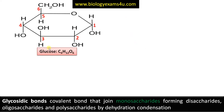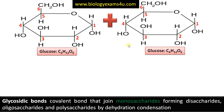Let's take an example. This is glucose in ring form, C6H12O6, a monosaccharide — the most common monosaccharide. This is also glucose. Now we have two glucose molecules, two monosaccharides. A bond is formed between the first carbon of the first monosaccharide and the fourth carbon of the second monosaccharide.